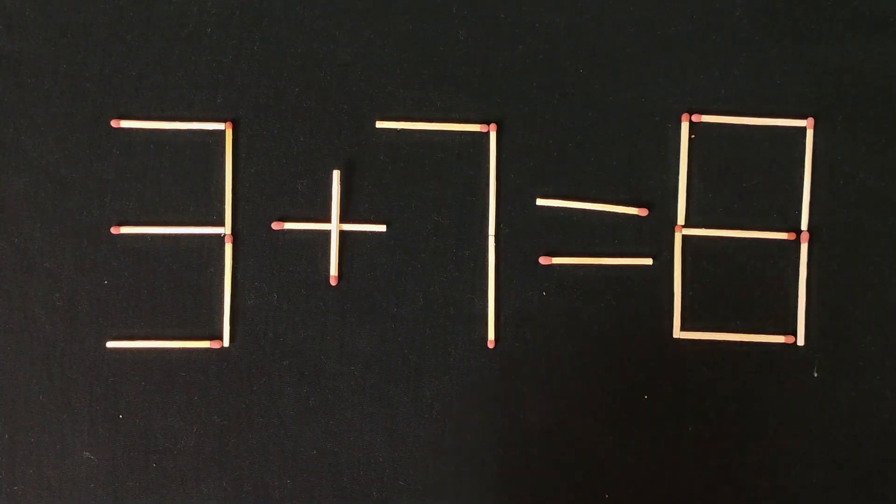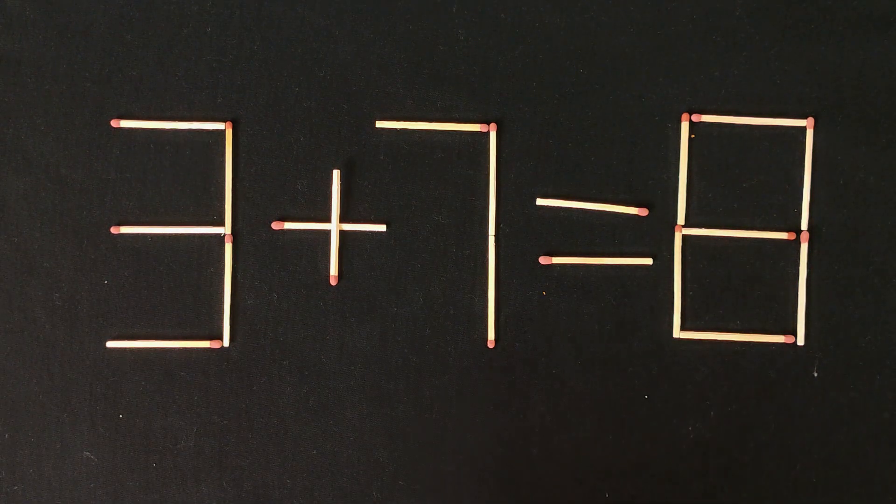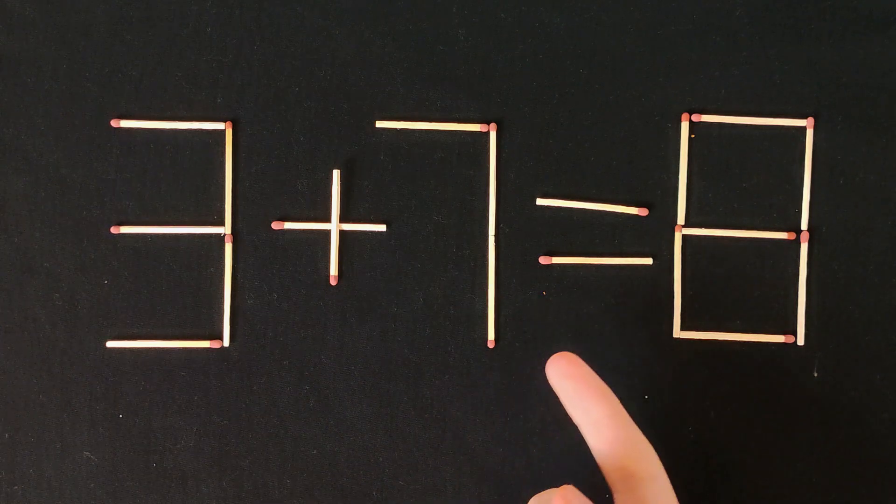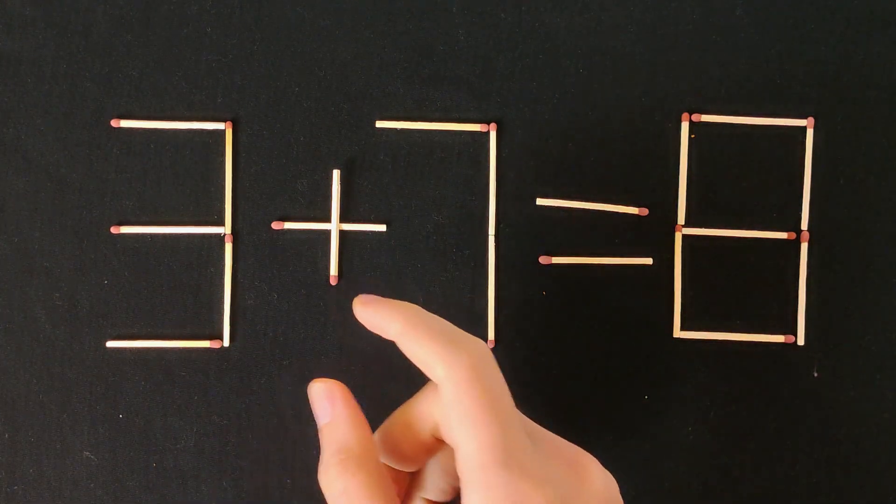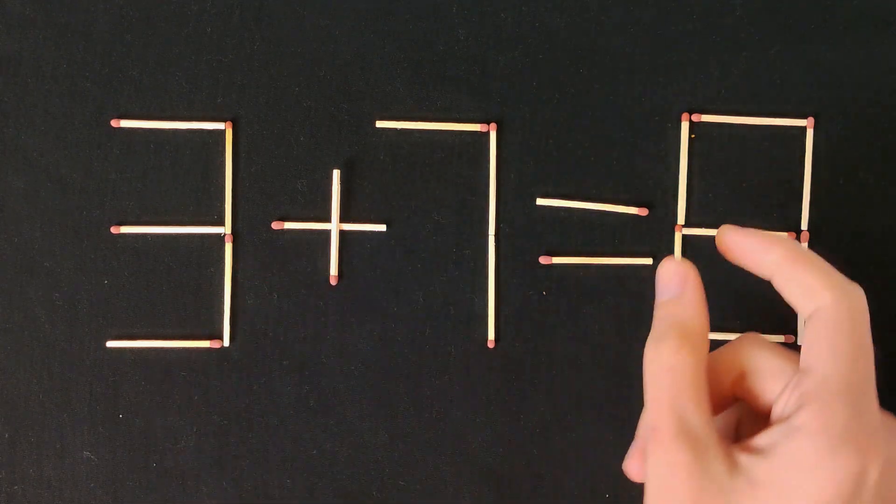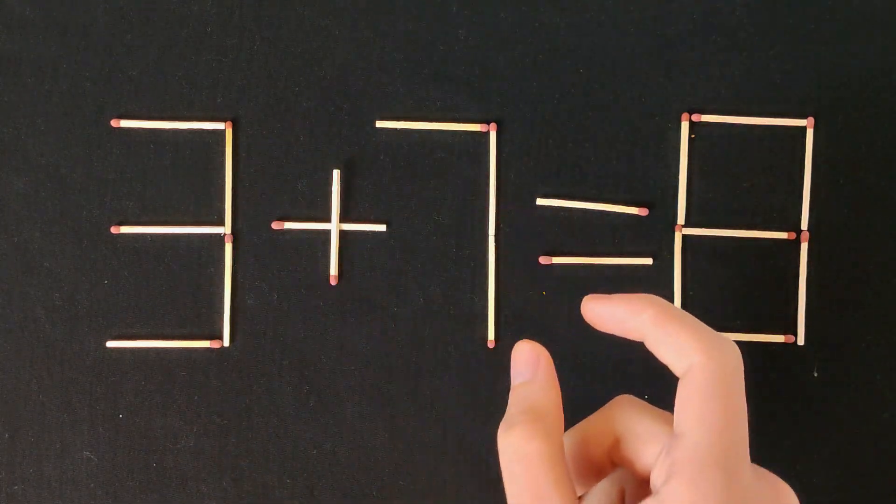Hello everybody! Today we have a puzzle like this. 3 plus 7 equals 8. That's a wrong equation. We need to rearrange only two matches so that this equation is correct.